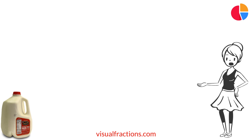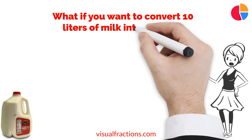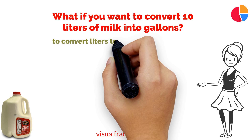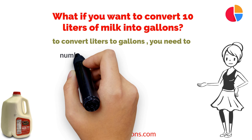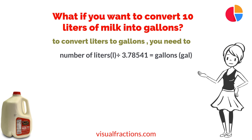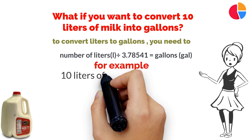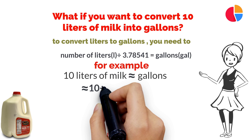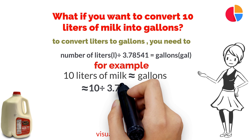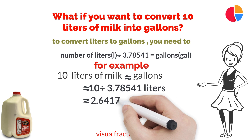But what if you want to convert 10 liters of milk to gallons? It's simple — to convert liters to gallons, divide the number of liters by the conversion factor of 3.78541. Suppose you have 10 liters of milk: divide by 3.78541 to get approximately 2.64172 gallons.